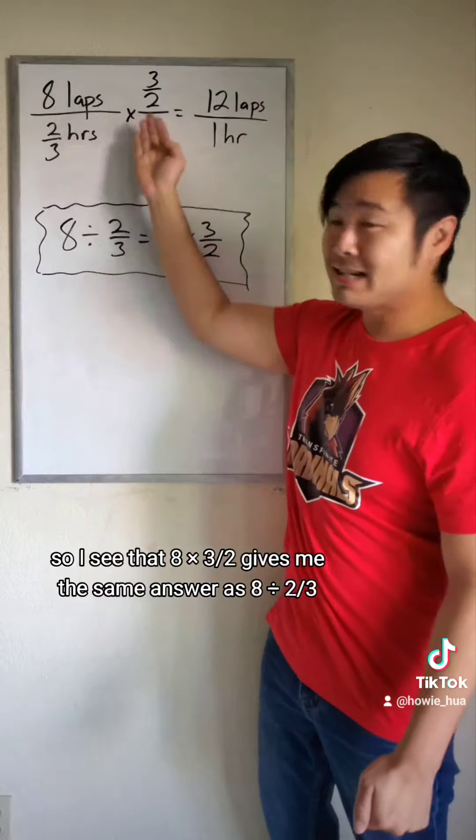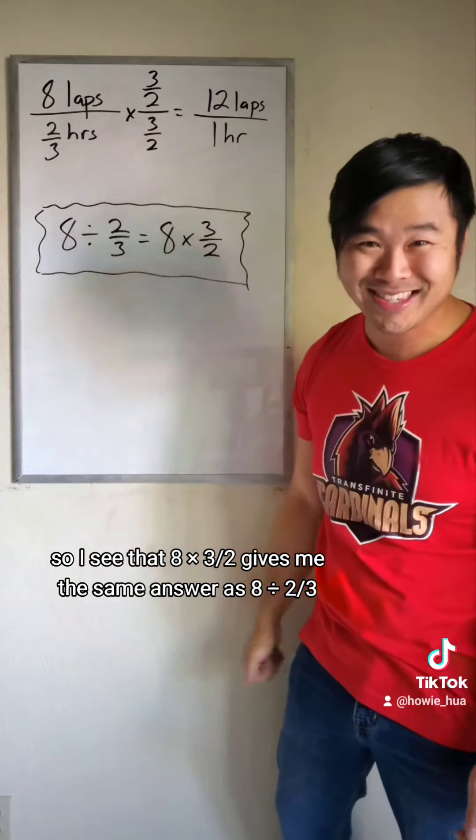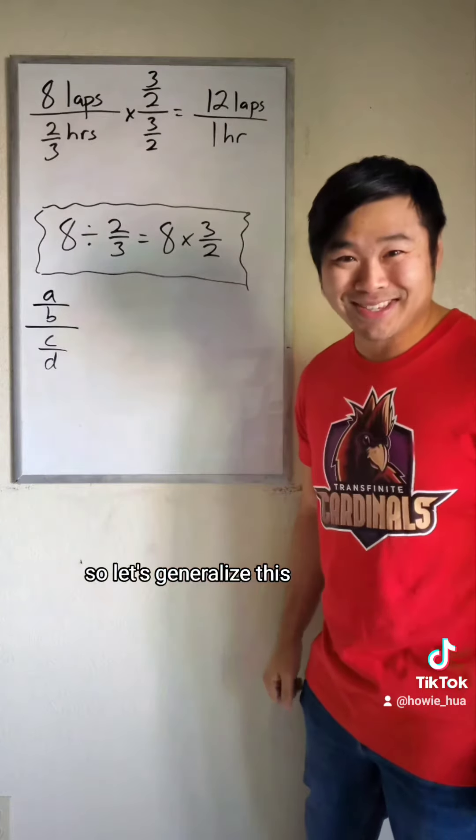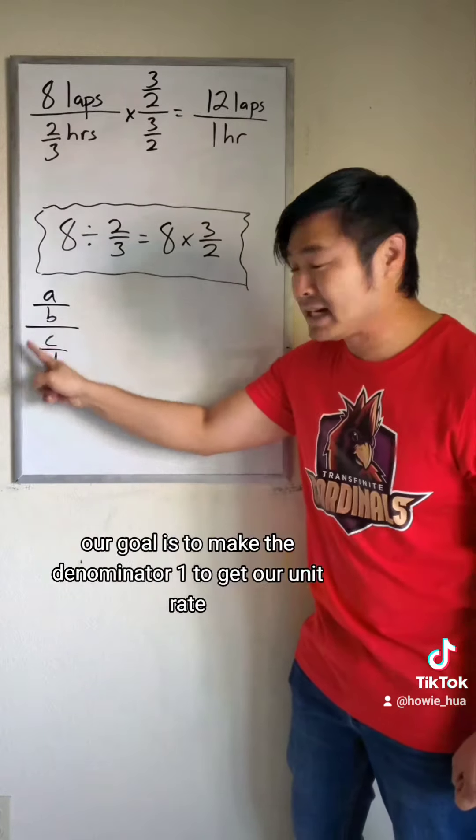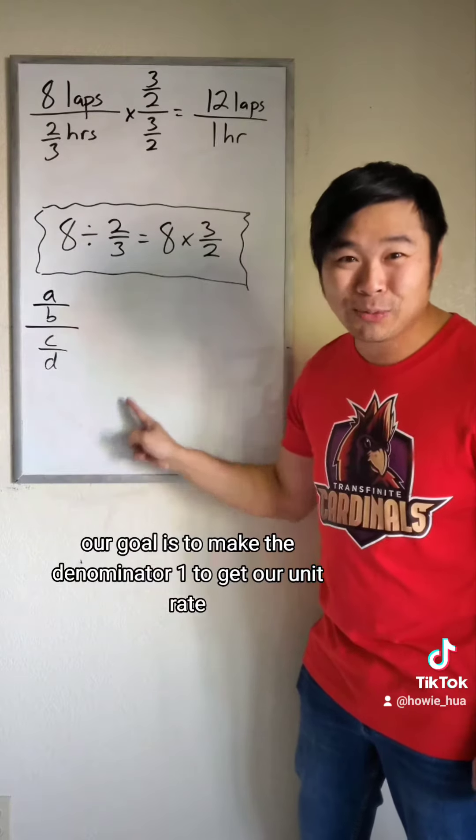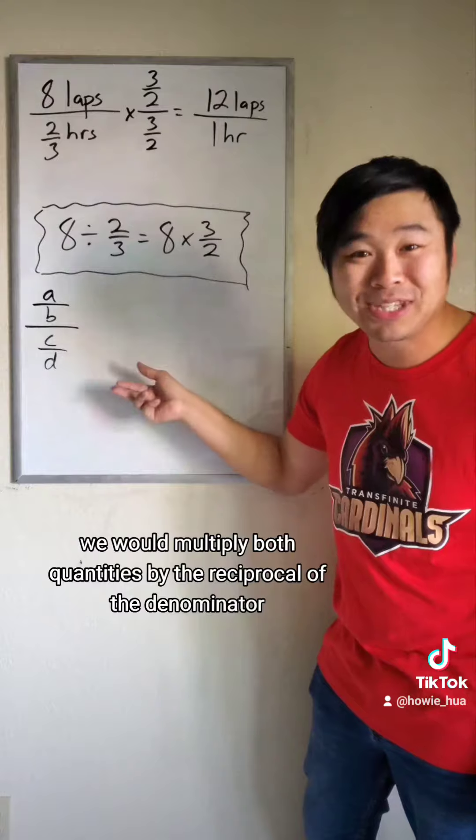So I see that eight times three halves gives me the same answer as eight divided by two-thirds. So let's generalize this. When we have a fraction divided by a fraction, our goal is to make the denominator one to get our unit rate. And to do that, we would multiply both quantities by the reciprocal of the denominator.